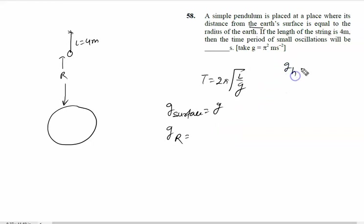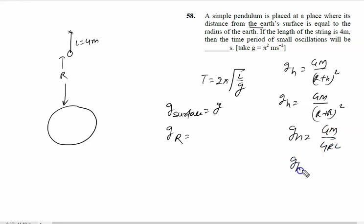Gravity at height h is given by GM/(r+h)². So g_h = GM/(r+r)² = GM/4r². Since GM/r² is gravity at the surface g, we have g_h = g/4. So gravity at height r is given by g/4.